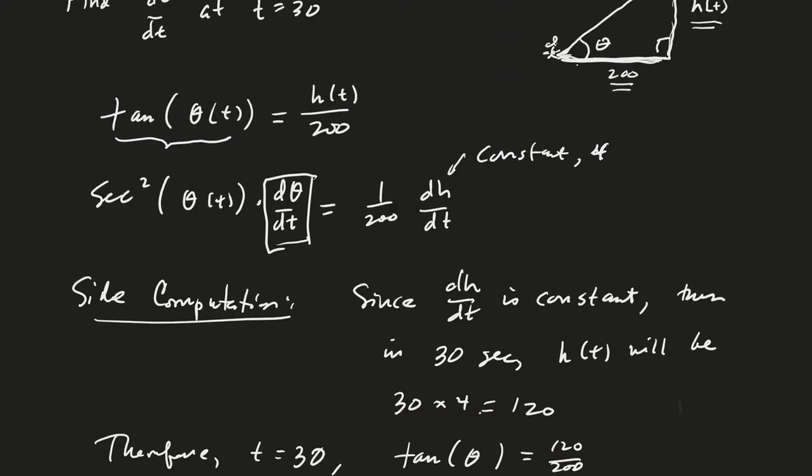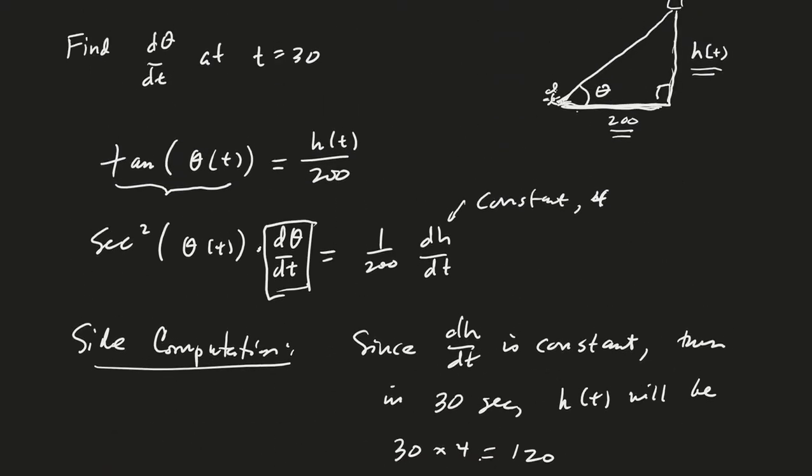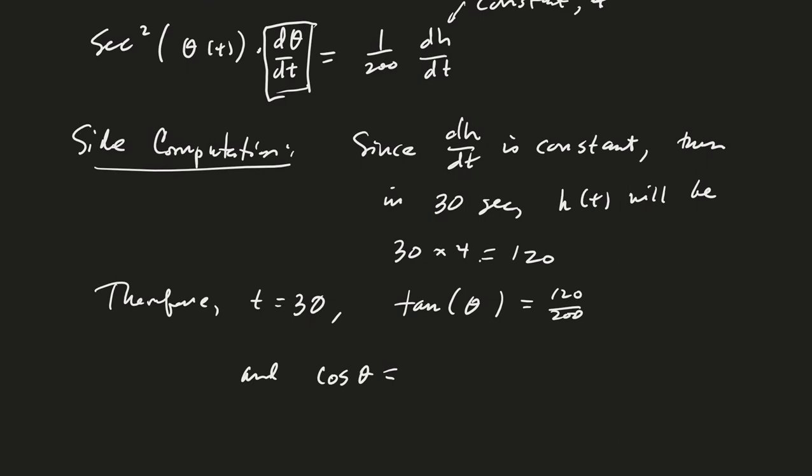And cosine of theta is going to be 200 divided by the hypotenuse, 200 divided by the square root of 120 squared plus 200 squared. And if you compute that, you get approximately 0.86.